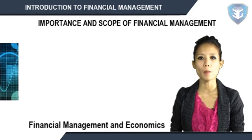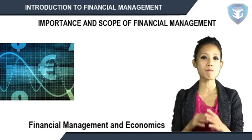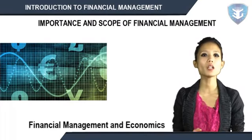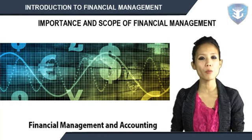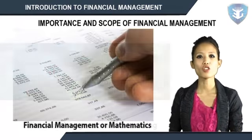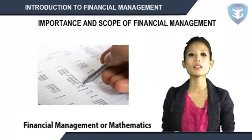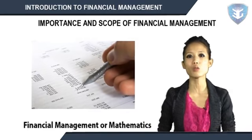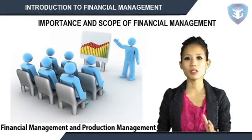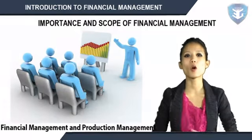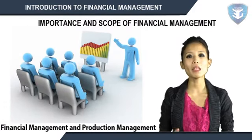Financial management and economics — financial economics is one of the emerging areas which provides immense opportunity to finance. Financial management and accounting — accounting records include the financial information of the business concern. Financial management and mathematics — modern approaches of financial management apply a large number of mathematical and statistical tools and techniques, also called econometrics. Financial management and production management — production management is the operational part of the business concern, which helps to multiply money into profit.